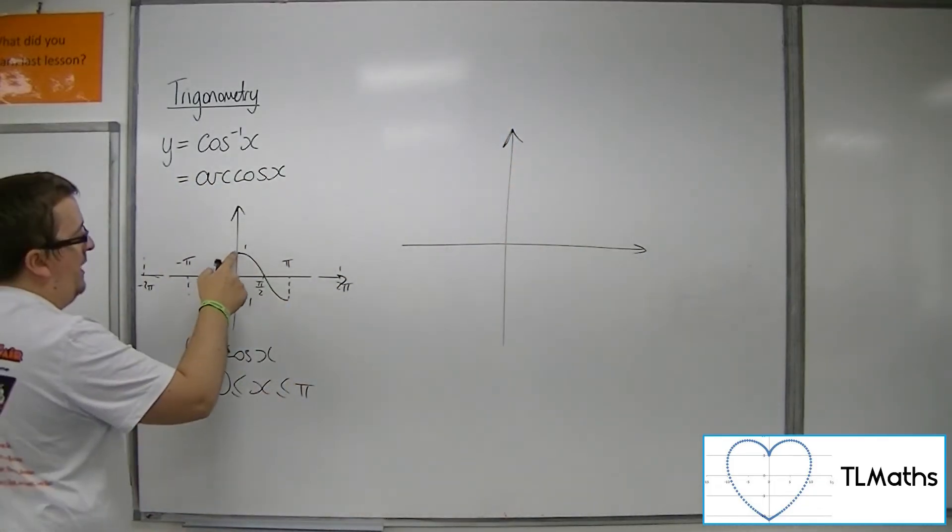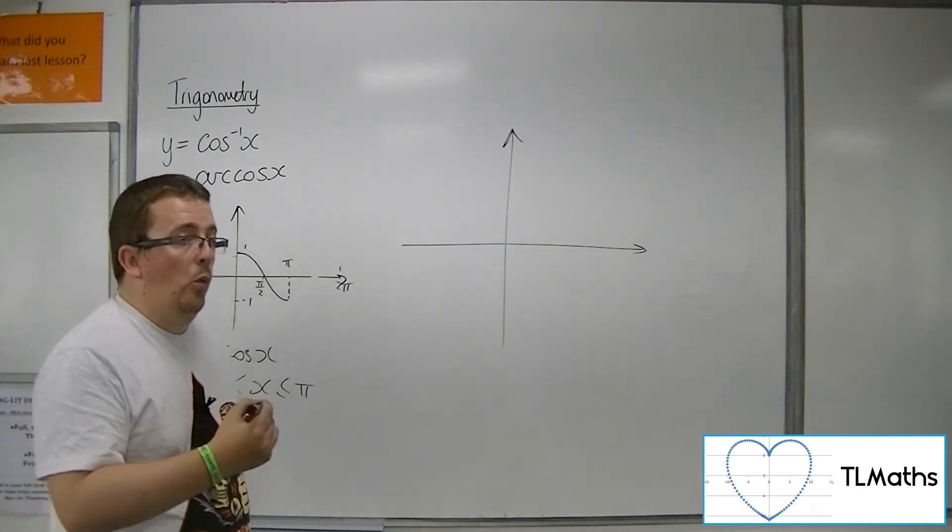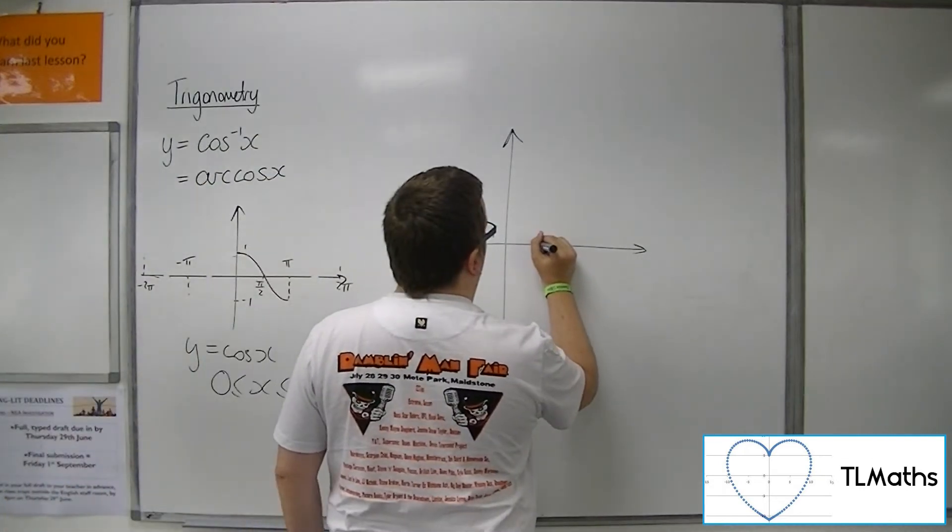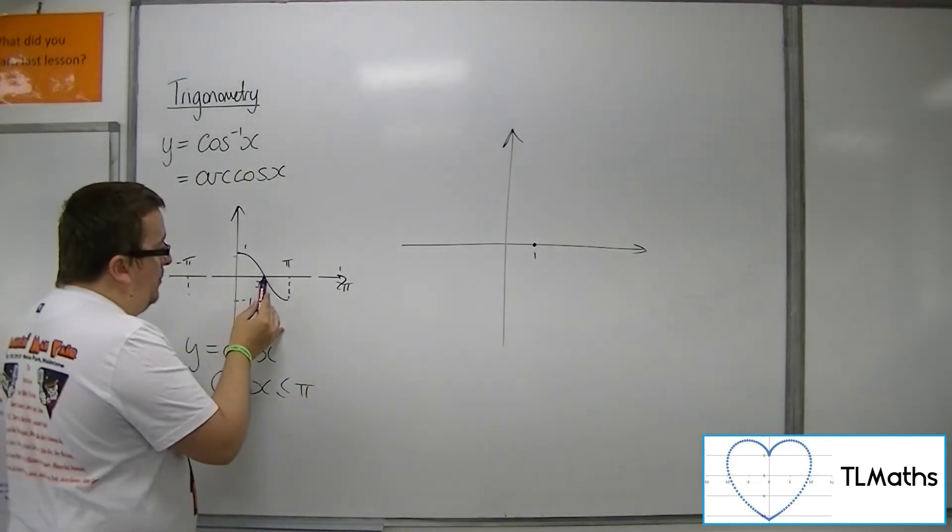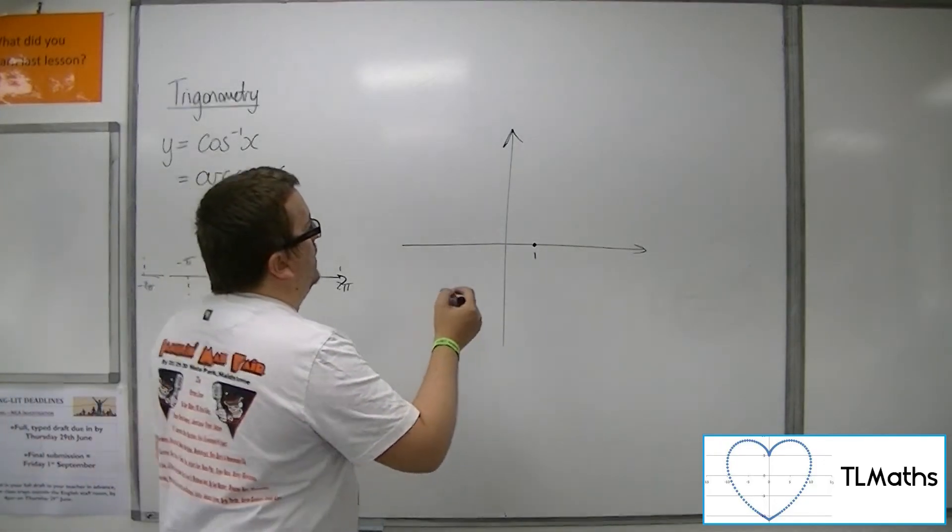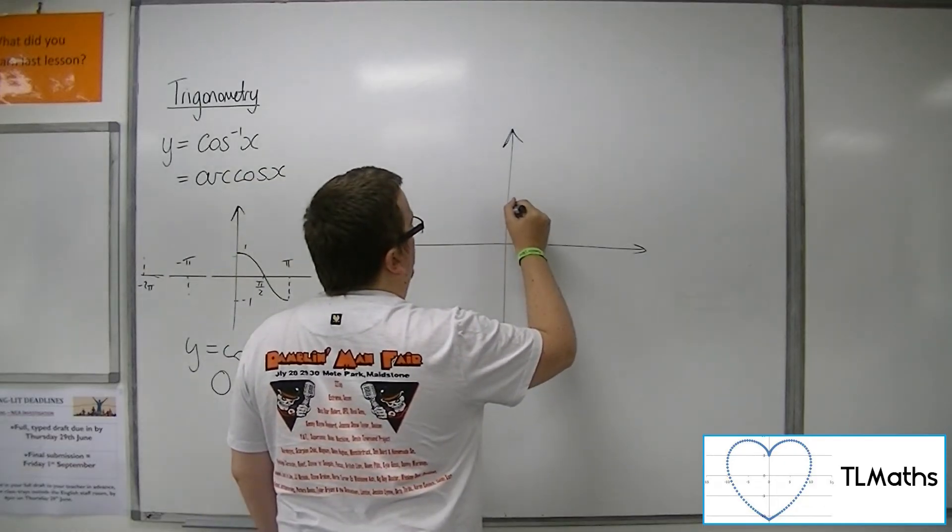So this point here, which is at 0, 1, becomes 1, 0. This point here, which is at pi over 2, 0, goes to 0 pi over 2.